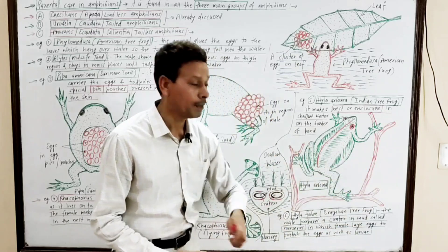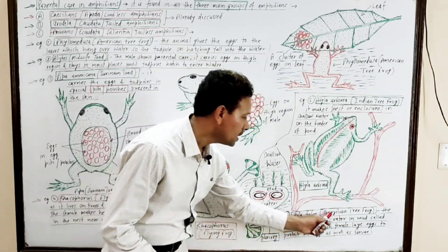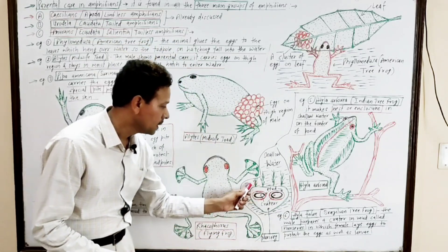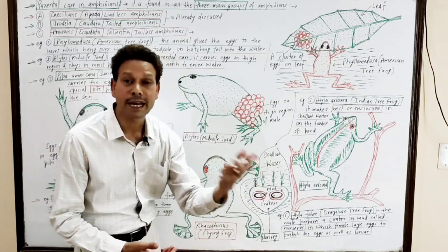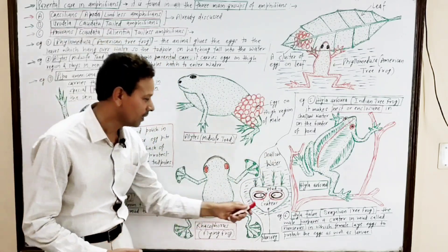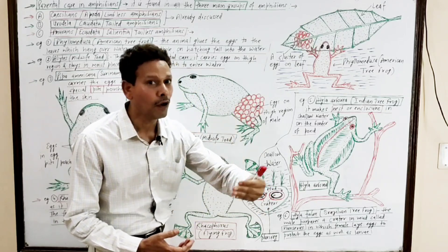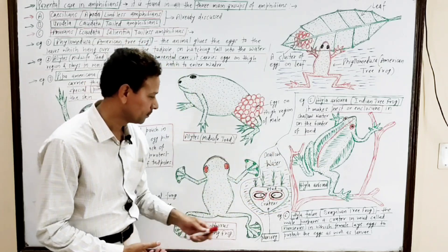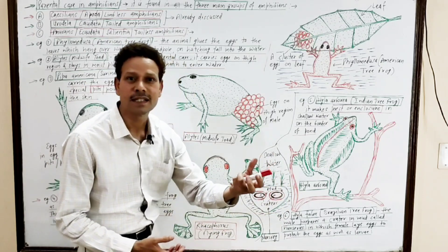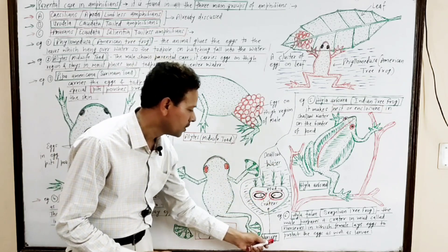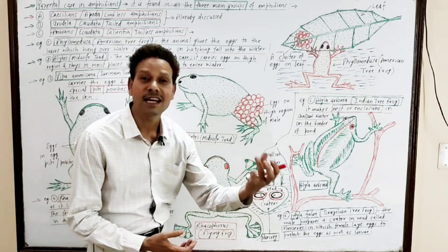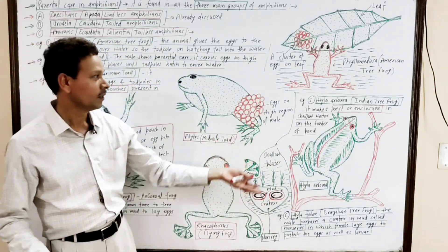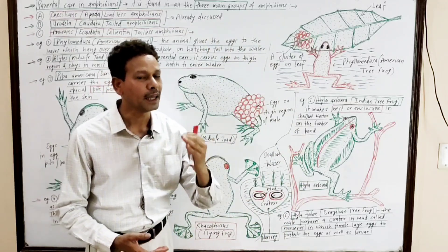The next example is Hyla faber, the Brazilian tree frog. In this species, the male frog produces special types of holes, craters, or nurseries in muddy soil in shallow water. The female deposits her eggs in these craters or nurseries, in which the eggs as well as the tadpole larvae are protected. This is all about parental care in amphibians.